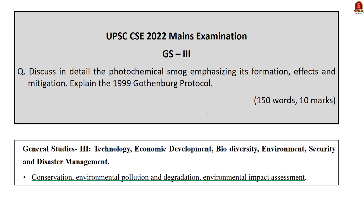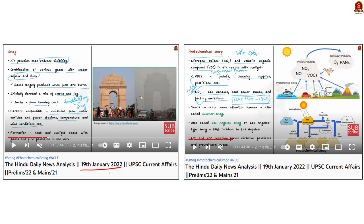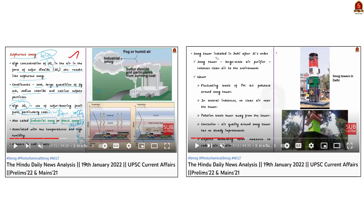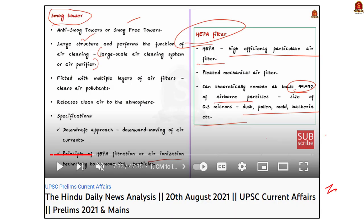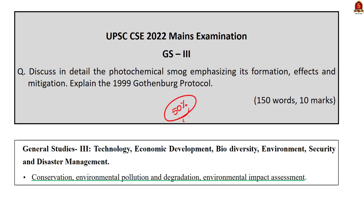Question number 7 in GS Paper 3: 'Discuss in detail the photochemical smog, emphasizing its formation, effects and mitigation. Explain the 1999 Gothenburg Protocol.' The first part we covered twice: in our 19th January 2022 Hindu News Analysis, we covered smog, photochemical smog, sulfurous smog, their formation and effects, along with the mitigation strategy of smog towers. In our 20th August 2021 Hindu News Analysis, we covered the same aspects focusing entirely on photochemical smog. However, we have not covered the 1999 Gothenburg Protocol in its entirety, so using our videos you can address about 50% of this question.